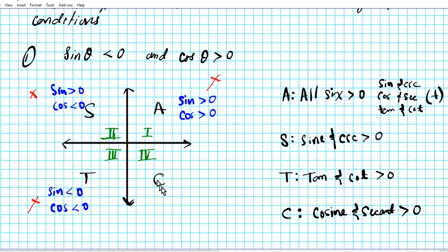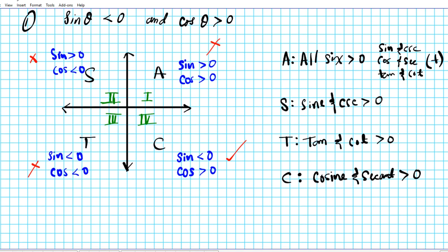Based on elimination, our answer should be quadrant number four. Let's verify: C tells us that only cosine and secant are positive, and everything else — which includes sine — is negative. So sine is less than zero and cosine is greater than zero. That matches the given conditions exactly. The final answer: theta lies in quadrant four, since sine is less than zero and cosine is greater than zero.